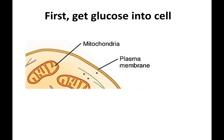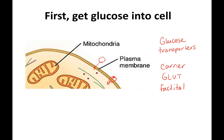Since the first step is glycolysis, we have to get glucose into the cell. There are glucose transporters on the plasma membrane called GLUT for glucose transporters, and they work by facilitated diffusion — they are carrier proteins. Glucose is too big and too polar to diffuse directly across the membrane.